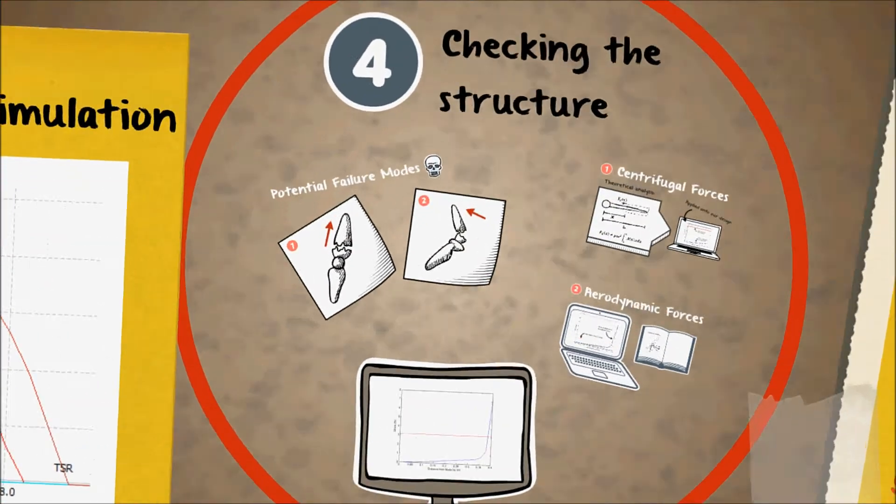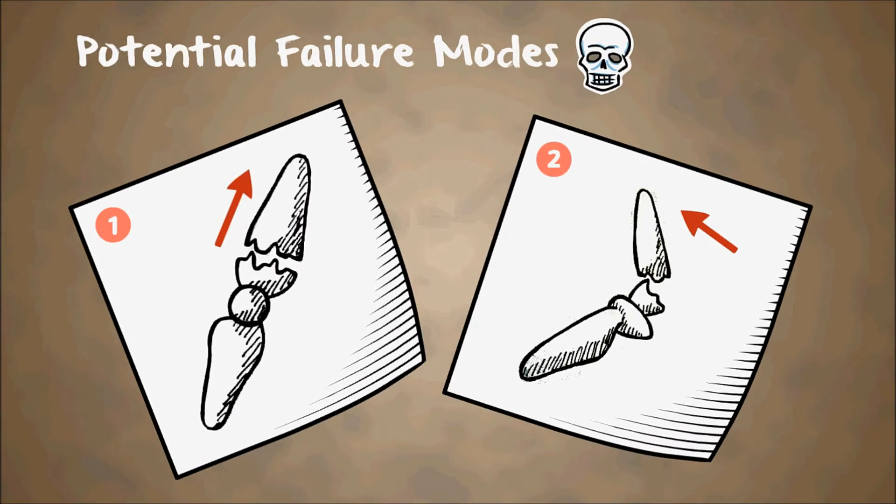Next, we checked for potential modes of failure. As a result of the dynamics of a wind turbine, there are two potential modes of failure which may occur. The first mode, where it fails along the plane of the blade, is related to centrifugal forces. The second mode, where the blade fails perpendicular to the plane that it is in, is related to aerodynamic forces.